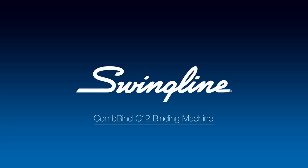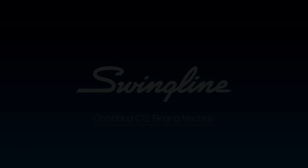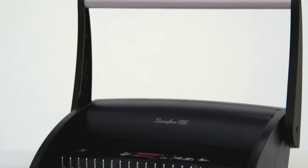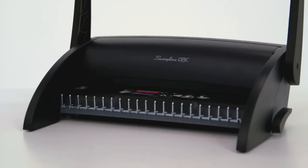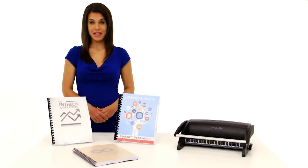Swingline GBC Combine C12 Binding Machine. When you need to create professional-looking documents, use the C12 Binding Machine. This machine is perfect for the occasional binding project in your department or small office.